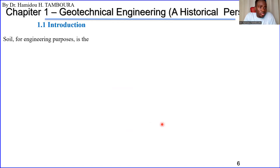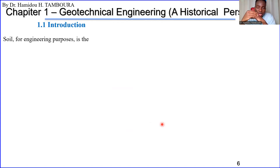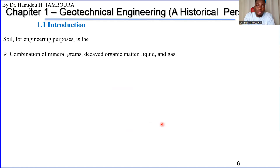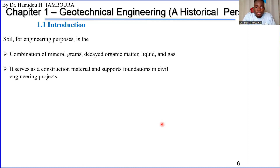As an introduction, in geotechnical engineering we need to define soil in an engineering context. For example, in agriculture they have their own definition of soil. In geotechnical engineering, soil is a combination of mineral grains, decayed organic matter, liquid, and gas — all mixed together. The soil serves as a construction material and also supports foundations in civil engineering projects.